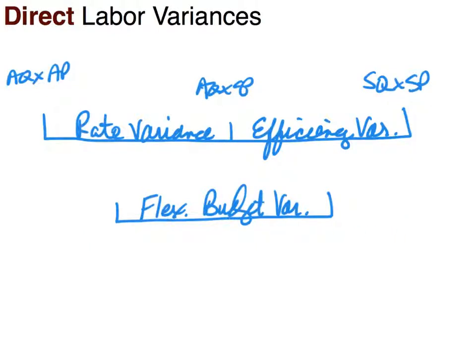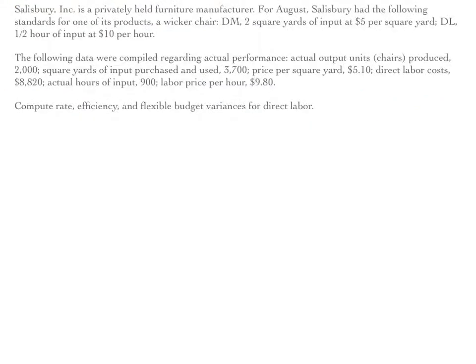We're going to use the exact same example that we did for material variances in the prior video, so if you have those notes please get that out — we're going to compare these two here in just a little bit. So Salisbury Inc. is a privately held furniture manufacturer. For August, Salisbury had the following standards for one of its products: a wicker chair.